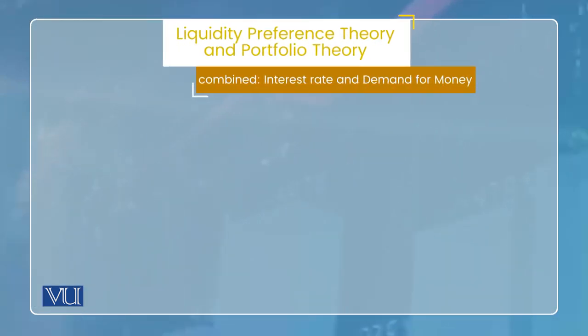यही बात हमने liquidity preference theory में भी देखी थी, लेकिन वहाँ reason transaction demand थी। यहाँ store of value के concept में है — कि हर asset store of value है। तो जैसे wealth या income बढ़ती है, हर asset की demand बढ़ती है, तो साथ money की भी demand बढ़ेगी। Reason different है, conclusion फिर same।